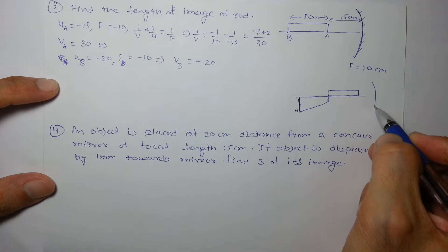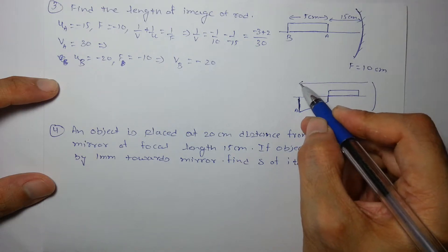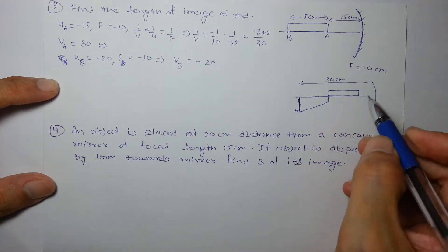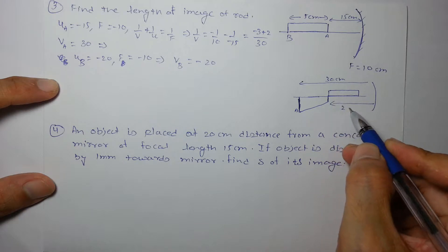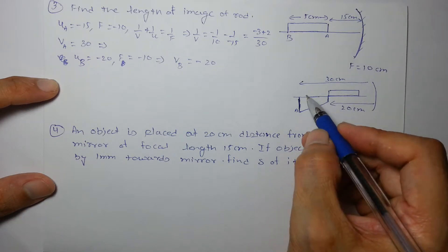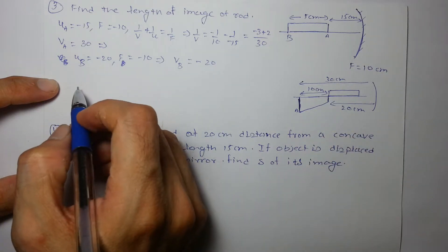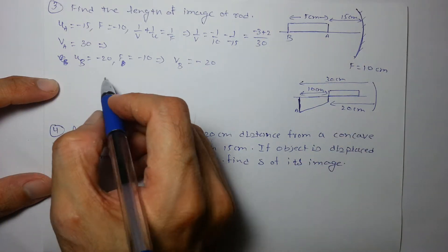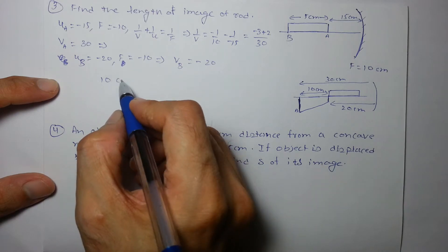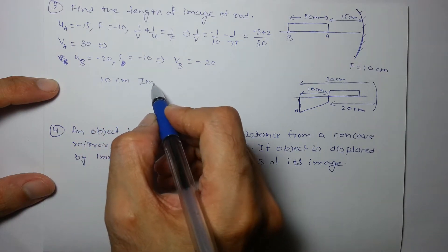What is the length? From the mirror, this is at 30 centimeter and this is at 20 centimeter, so we can say length of the image is nothing but 10 centimeter. So 10 centimeter is the image of rod.